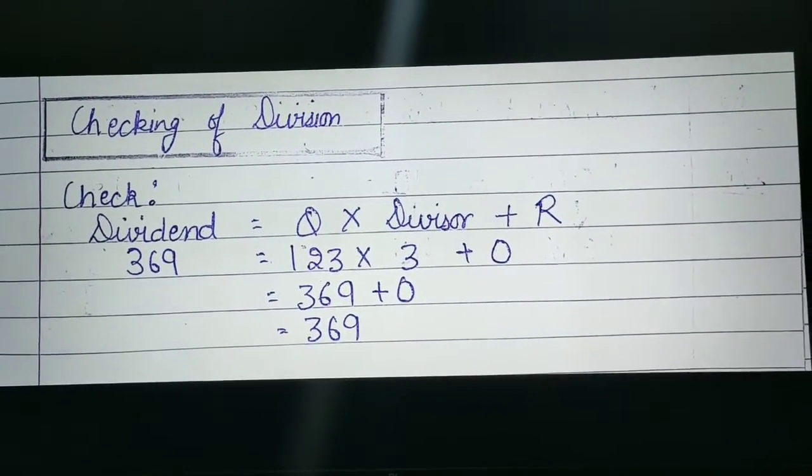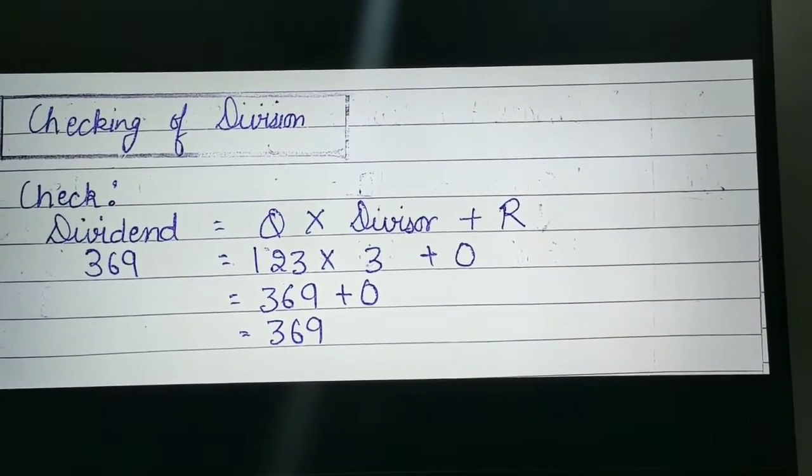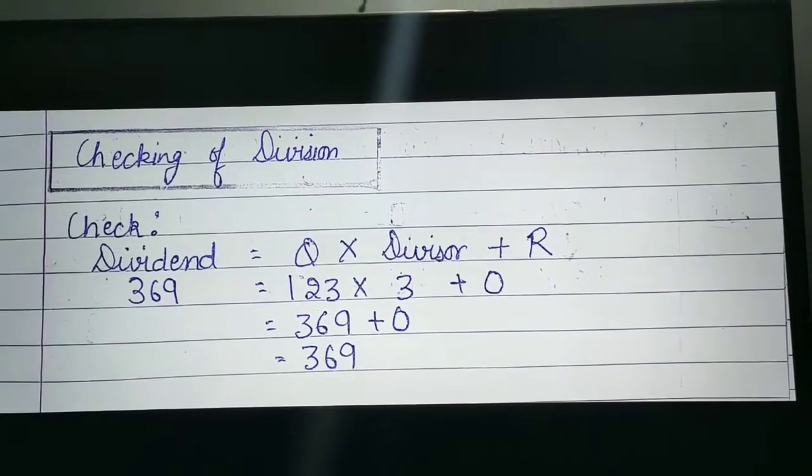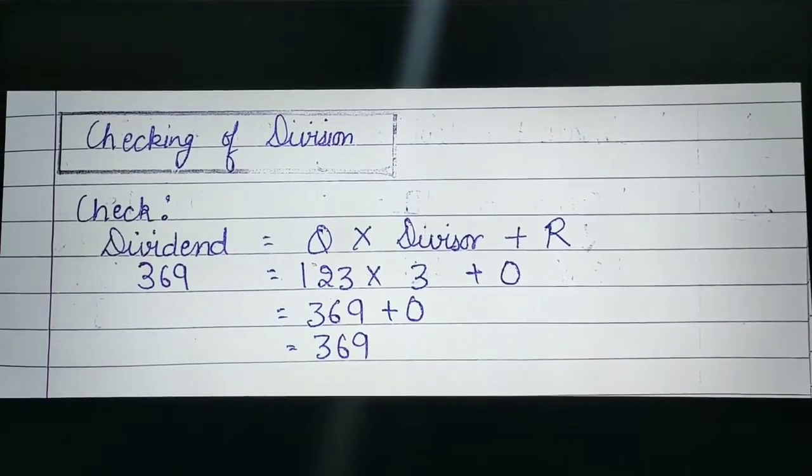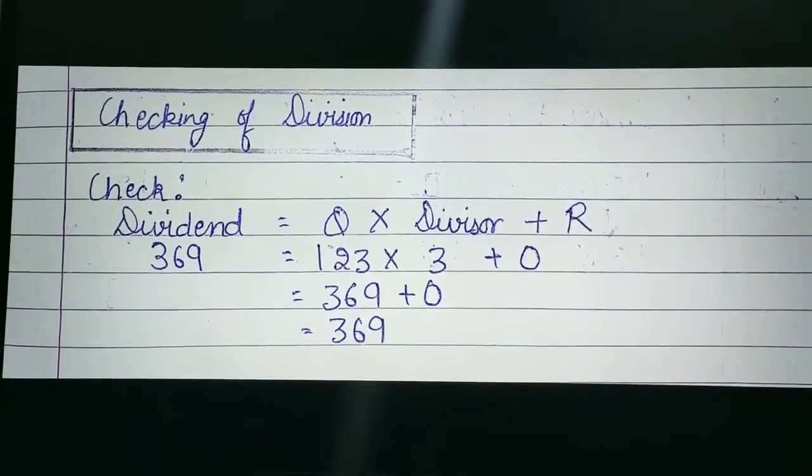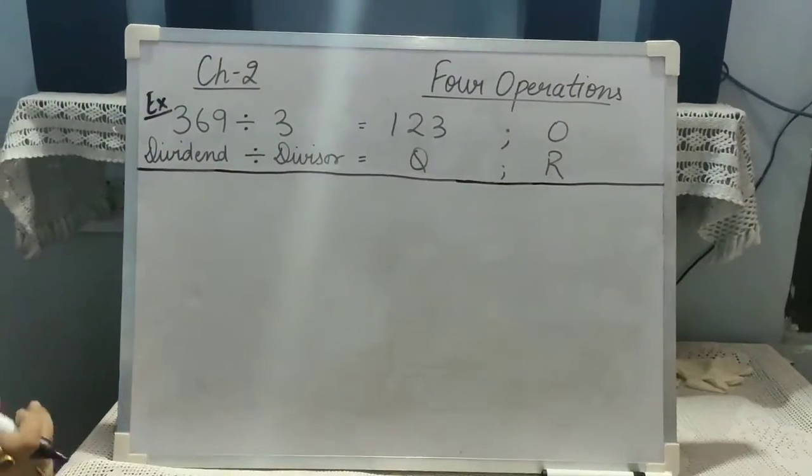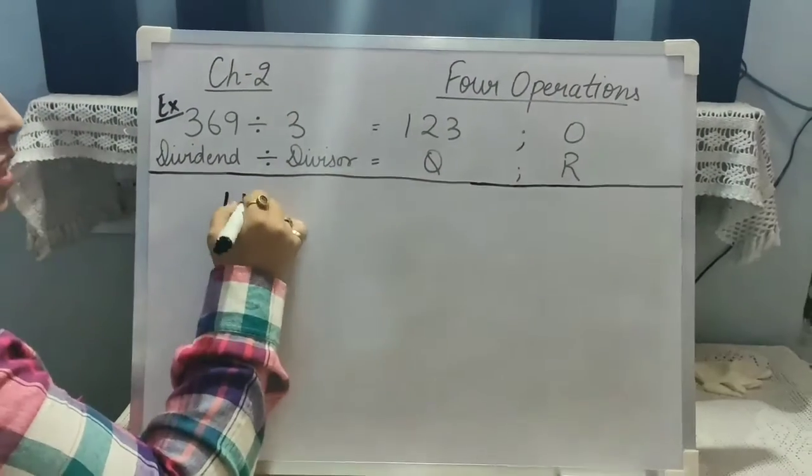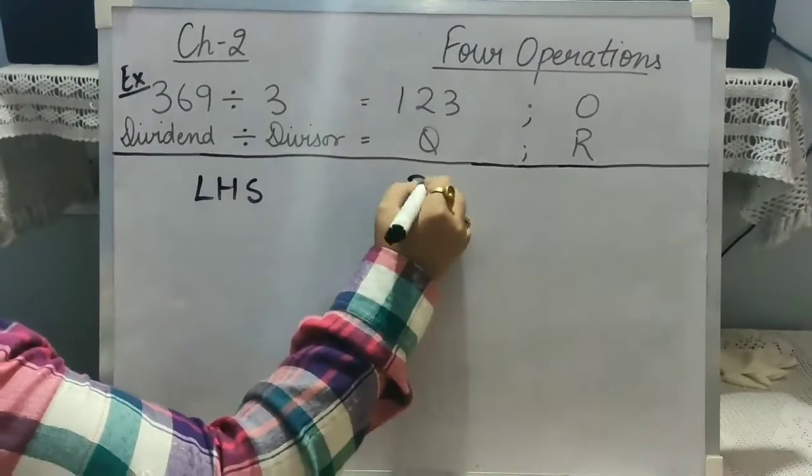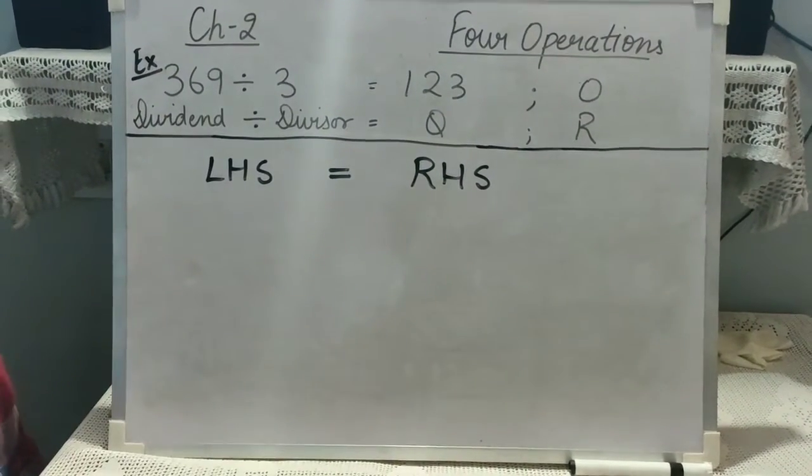Next point is checking of division. In division, we have a balanced equation by using it we can check our answer to know is the answer correct or not. What do you mean by balanced equation? Balanced equation is an equation in which both LHS and RHS are same. We can say both the sides are equal.